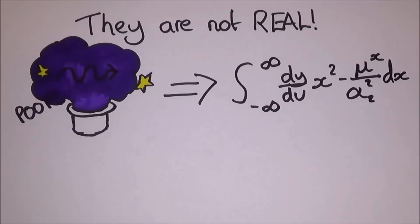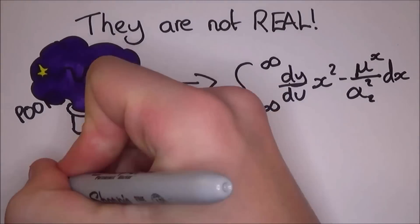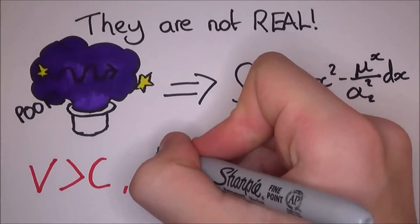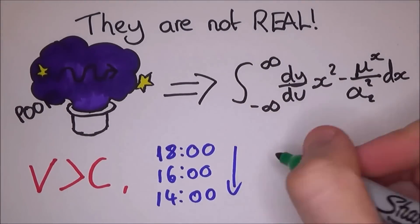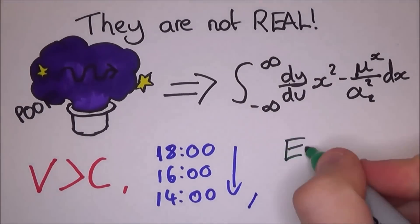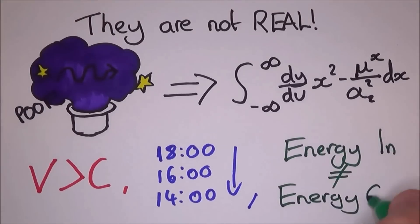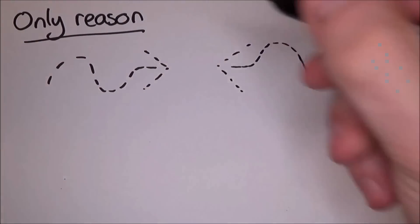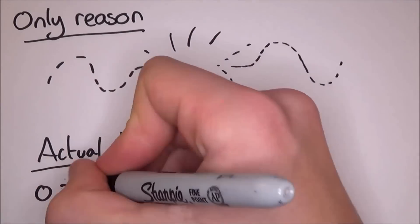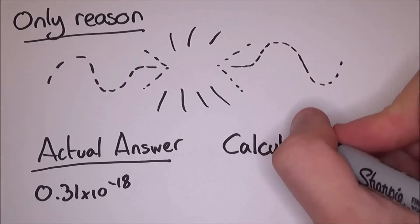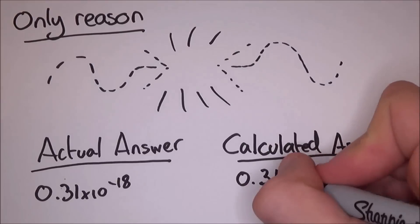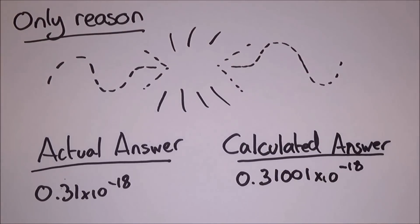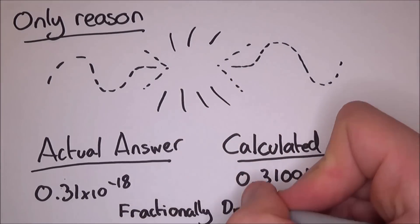In fact, virtual photons often break the laws of physics. They can go faster than light, they can travel back in time, and they don't even conserve energy. The only reason that they work is that they more or less cancel each other out in equations, so the answer that we get is only fractionally off from the actual answer, which means that we have to call it an approximation.